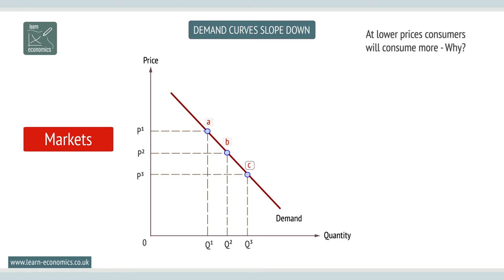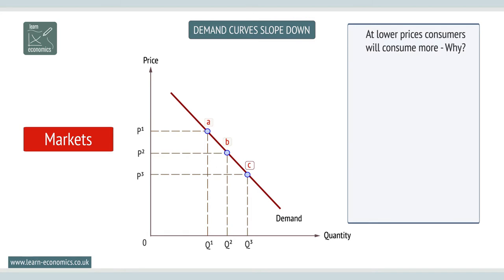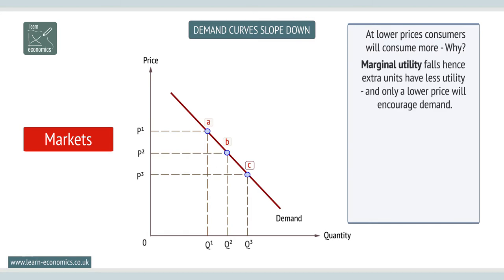Marginal utility or benefit falls as more is consumed, and a lower price will encourage demand. Marginal is an important concept in economics and means the additional amount of something resulting from an economic action. In this case, marginal utility is the additional benefit gained from consuming one more unit of a good or service.